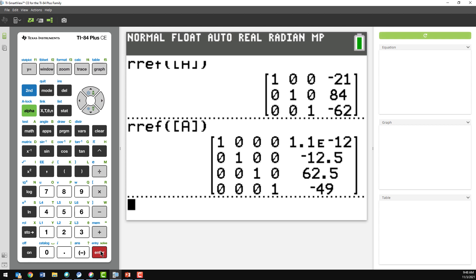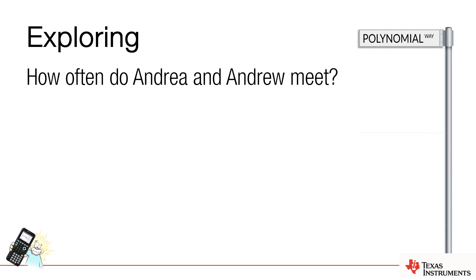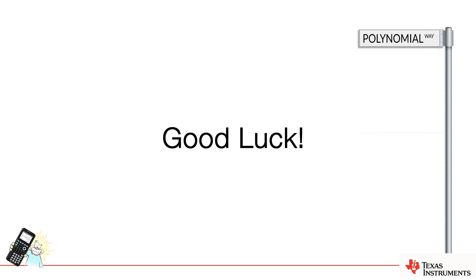Our personal polynomials investigation asks us to explore palindromic names and come up with patterns about the degree of the polynomial. The last section looks at how often people intersect or meet. Consider Andrea and Andrew — do we need to find their entire equations? They'll have the points A, N, D, R, and E in common, so we already know five points where they're going to cross. They won't intersect at their last point, but what happens to the tail end of that polynomial? That's up to you to explore. Good luck with your personal polynomials investigation, and thanks for watching.